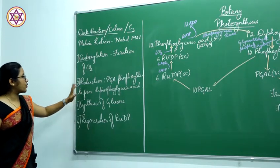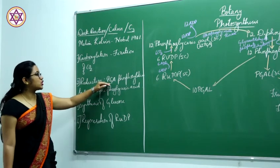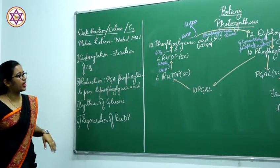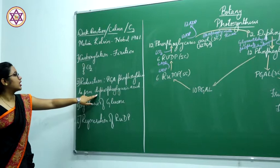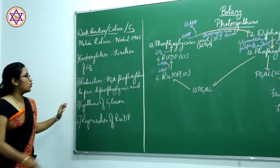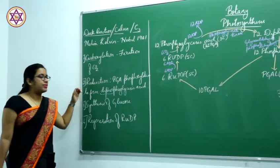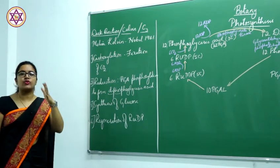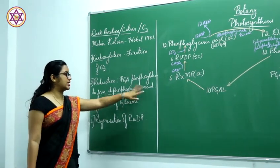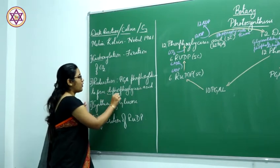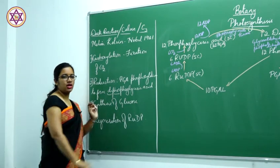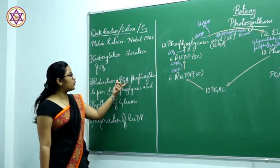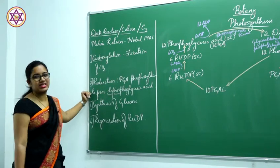Carboxylation means carbon is being added on — the fixation of carbon dioxide is known as carboxylation. The second step is reduction: phosphoglyceric acid is reduced to form diphosphoglyceric acid. Di means two, so there is addition of 2 inorganic phosphates into phosphoglyceric acid.